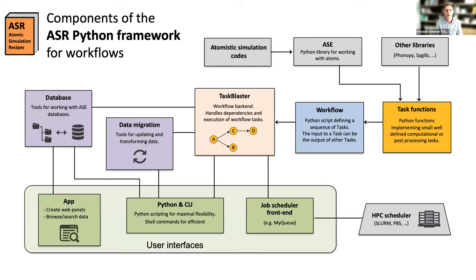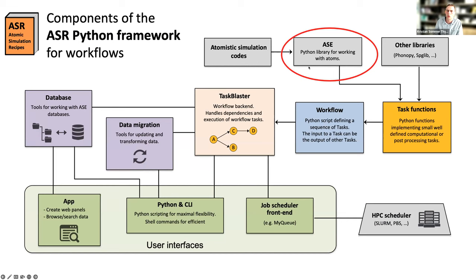The main components of the ASR Python framework: we use ASE as an interface to atomistic simulation codes. ASE is a Python library and environment for working with atoms and simulations, a strongly community-driven and very active project with interfaces to about 30 different simulation codes. We currently have a hackathon at DTU working on improving the interfaces between ASE and a number of electronic structure codes, which will make it much easier to switch from one DFT code to another within ASE.